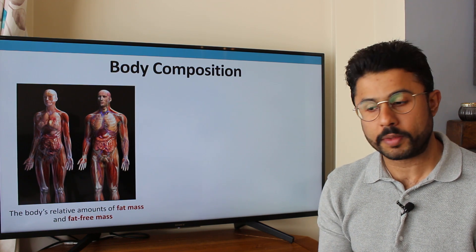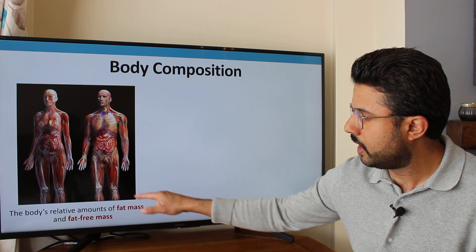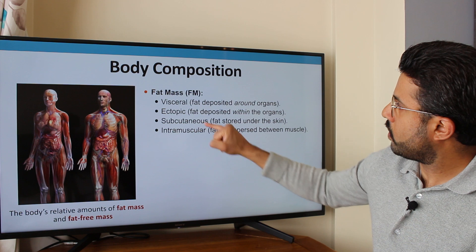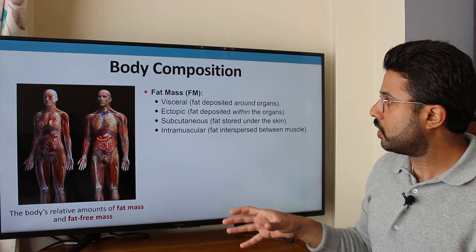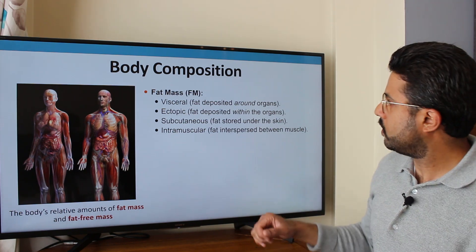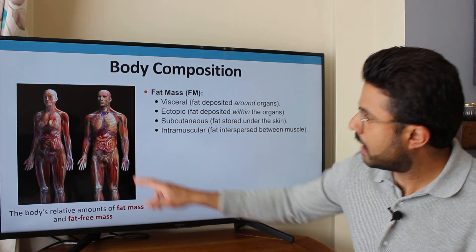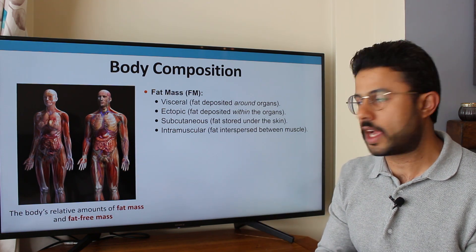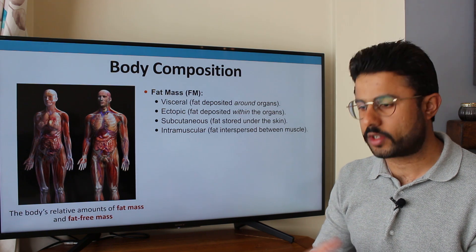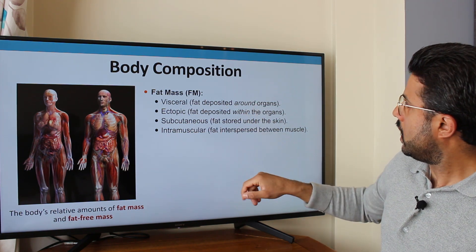Before we go forward, it's very important to understand what body composition is. The simple definition is the relative amounts of fat mass and fat free mass in our body. Fat mass can consist of a number of different types. Visceral fat is commonly found around the organs — stored around our abdominal organs — and it's the worst type of fat to have, because fat can release harmful chemicals into the circulation which can attack blood vessels, making obesity a major risk factor for cardiovascular disease.